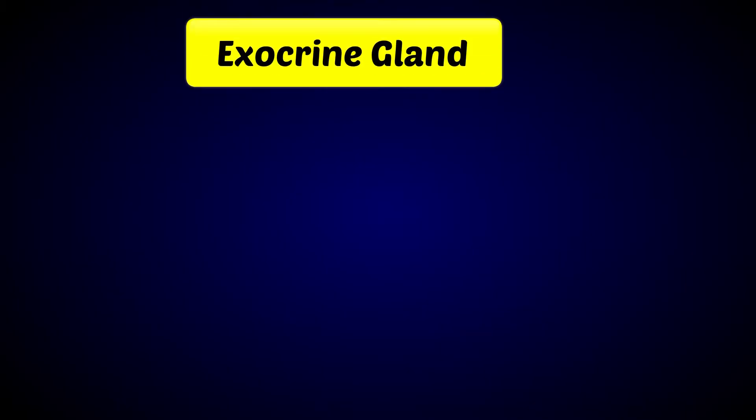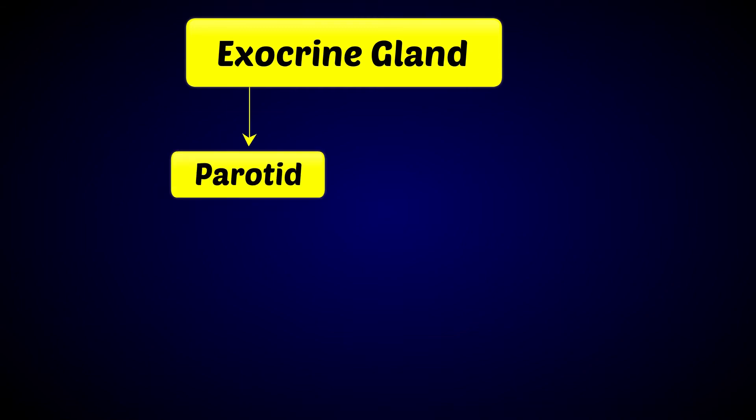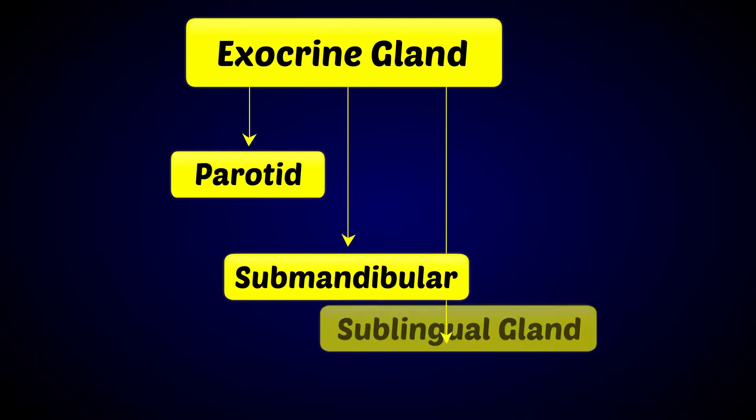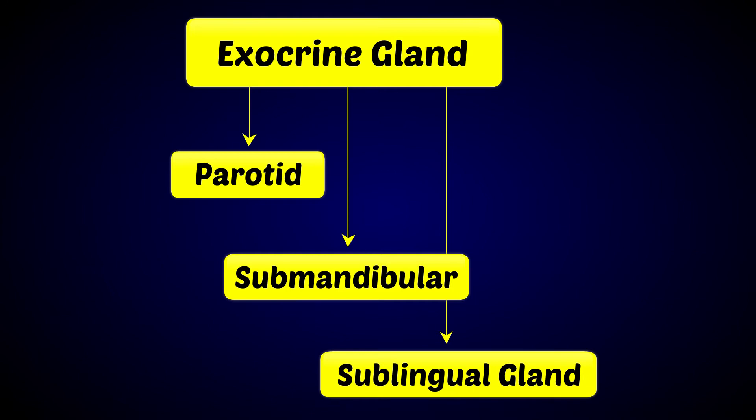Let us learn about the exocrine gland. It consists of the parotid, submandibular, and sublingual glands.